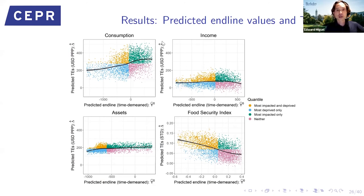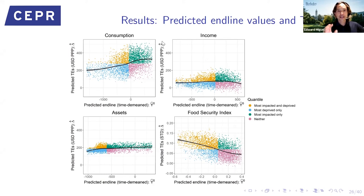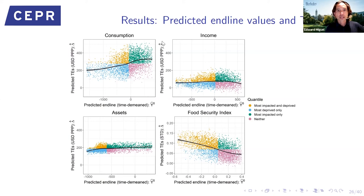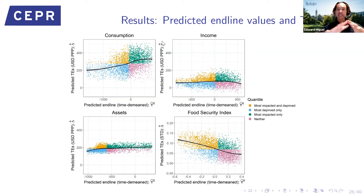Questions from the chat anticipate the next results: what features is the machine learning picking up on to explain these patterns? This will be shown shortly. Alessandro asks about looking at impacts on marginal utility rather than levels, which connects to the optimal balanced targeting rule R* that accounts for both deprivation and impact simultaneously.